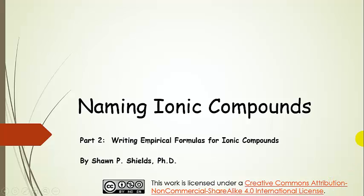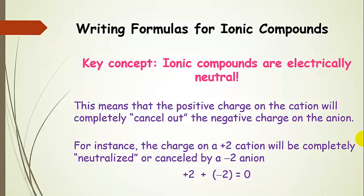Now we're going to learn how to write formulas for ionic compounds. The key concept here is that when you have an ionic compound, it is electrically neutral. That means it has no excess charge, so it doesn't have an overall positive or negative charge — it's completely zero.